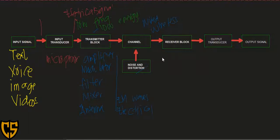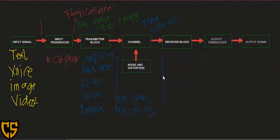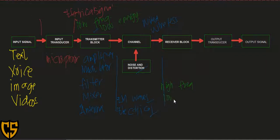After transmission along the channel, the type of signal received could either be electromagnetic waves or electrical waves depending on the type of transmission used. However, looking at the property of the signal that was transmitted, when it arrives at the receiver block it would still be high frequency — but it would already be low energy.